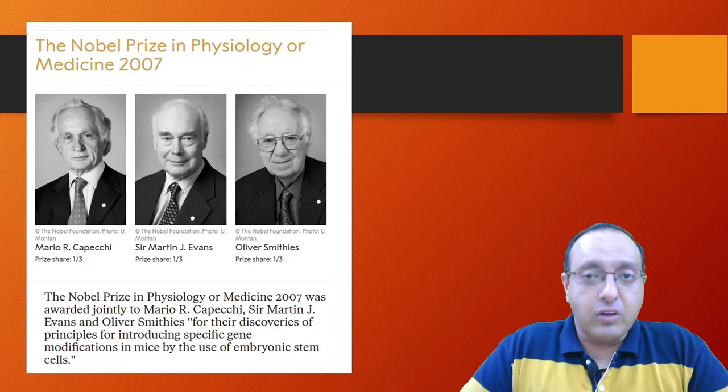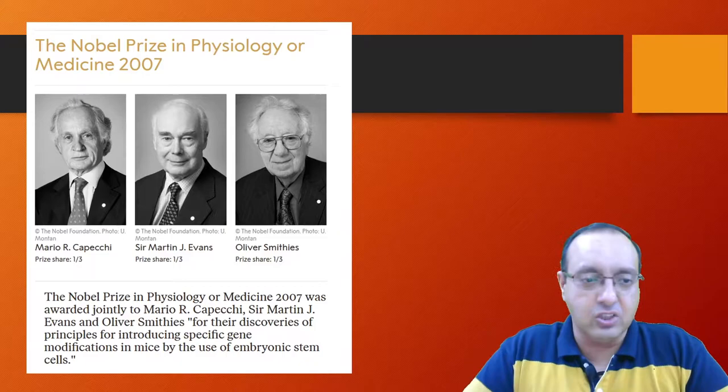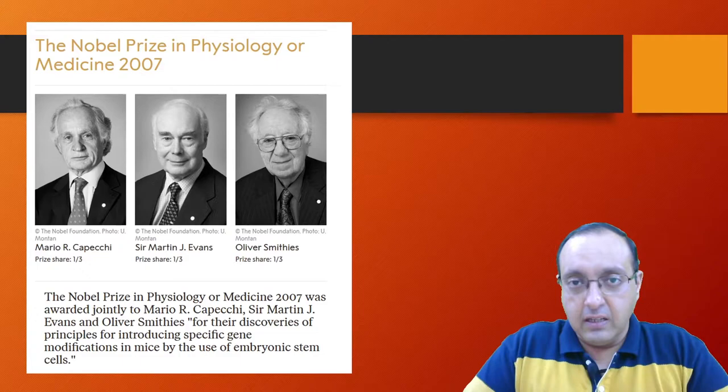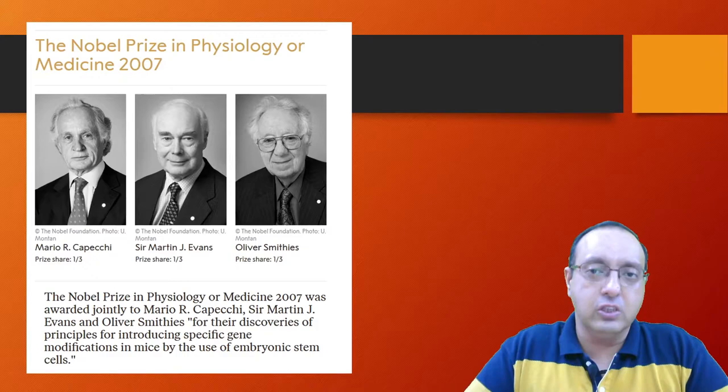The technique for developing transgenic mice which have genes knocked out was pioneered by three researchers: Mario Capecchi, Sir Martin Evans, and Oliver Smithies. They were instrumental in developing the use of embryonic stem cells to create transgenic mice, and from this they improved the technology to create gene knockout mice.